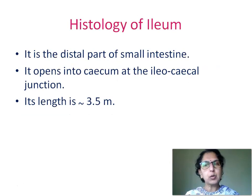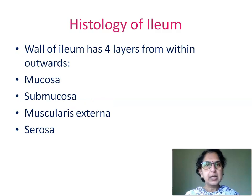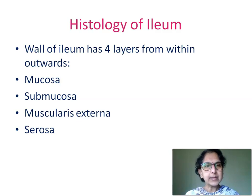We now go on to study histology of ileum. Ileum is the distal part of the small intestine. It opens into the cecum at the ileocecal junction, and its length is approximately 3.5 meters. The wall of ileum has four layers from within outwards: mucosa, submucosa, muscularis externa, and serosa.